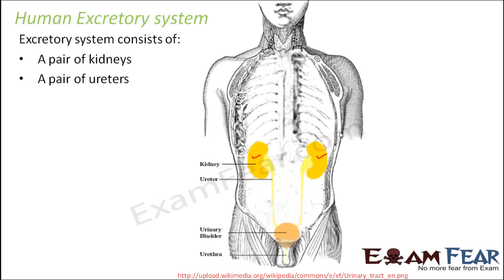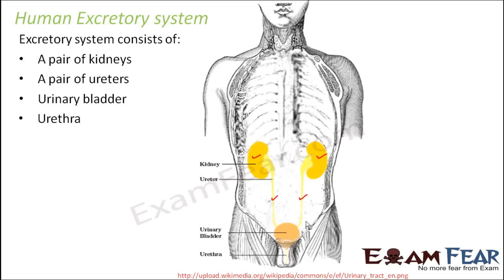A pair of ureters — these tube-like structures which you see, one and two, form the pair of ureters. Then there is the urinary bladder — a sac-like or bag-like structure. And the last one is the urethra, a small structure with a hole through which urine is excreted out. These four things together form the human excretory system.